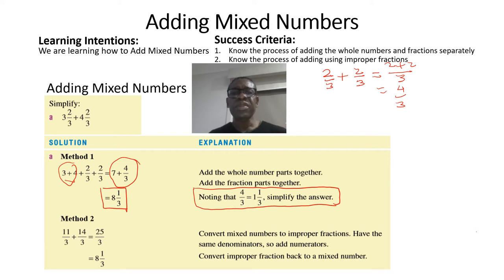Second method: Adding the mixed numbers by converting first into improper fractions.